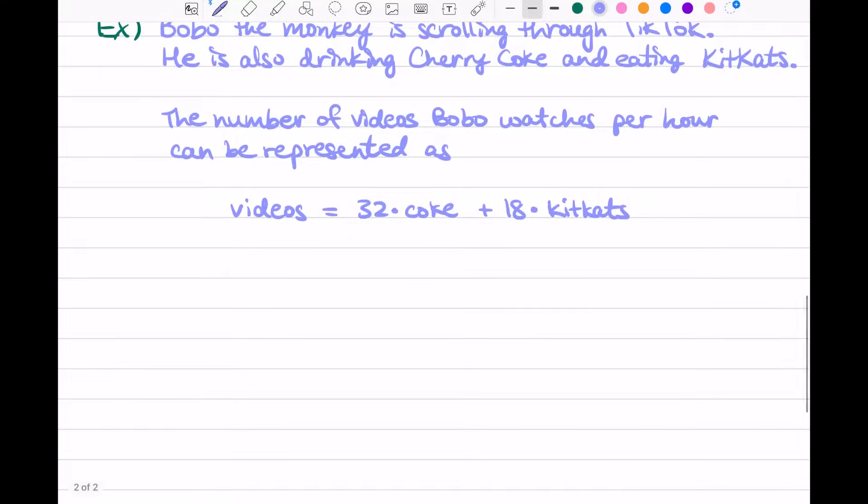Now just using variables, which are just numbers in disguise, we can rewrite this equation as V, let's just say V for videos, equals 32 times C for Cokes plus 18 times K for Kit Kats. And just to be clear, we'll write down what each of these variables means. V is the number of videos. C is the cans of Cherry Coke. And K is the number of Kit Kats.